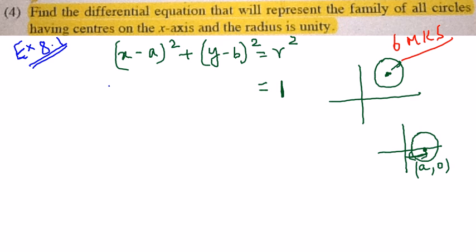So my equation becomes x minus a the whole squared plus y squared equal to 1. So as we all know to form the differential equation, we have to remove the constant a.